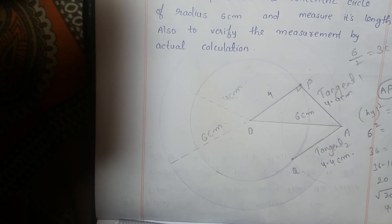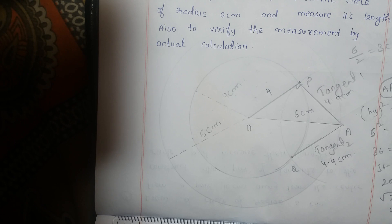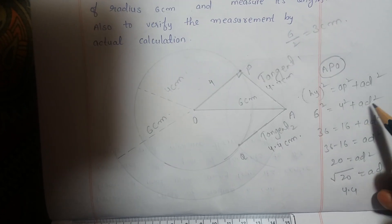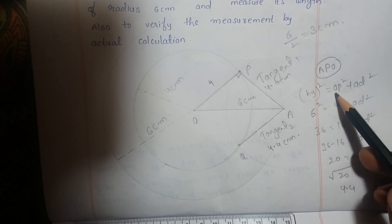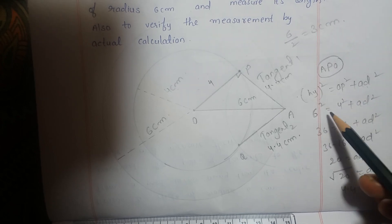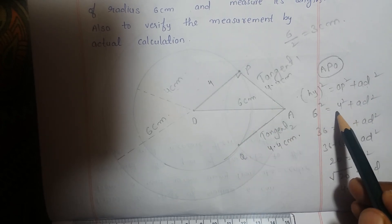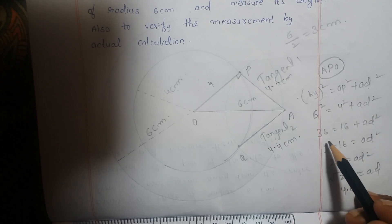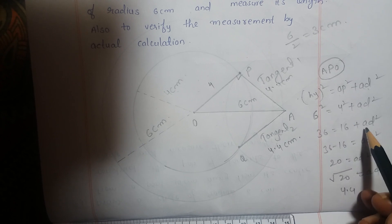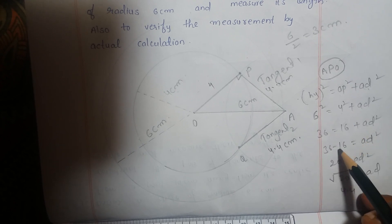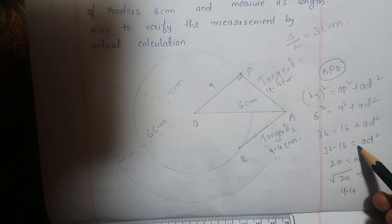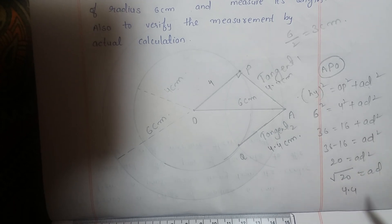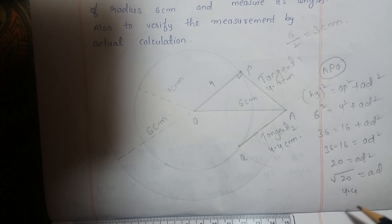Therefore AP = √20, which is approximately 4.4 cm. This verifies our measured length of approximately 4.4 cm.